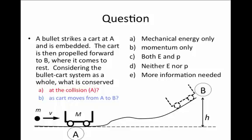And then the cart, as a result of having that bullet hit it, is propelled forward until it rises up a hill to the point marked B at some height h above the initial height.